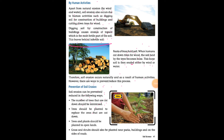Trees and plants should be planted in open lanes. Grass and shrubs should also be planted near parks, buildings, and on the sides of roads. This is a very important topic of prevention of soil erosion.